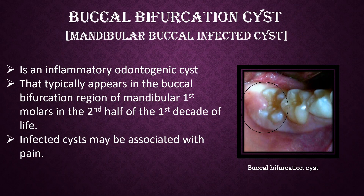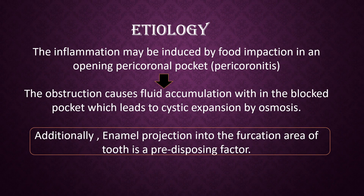Infected cysts may be associated with pain. Etiology: The inflammation may be induced by food impaction in an opening pericoronal pocket, that is pericoronitis. The obstruction causes fluid accumulation within the blocked pocket, which leads to cystic expansion by osmosis. Additionally, enamel projection into the furcation area of the tooth is a predisposing factor.